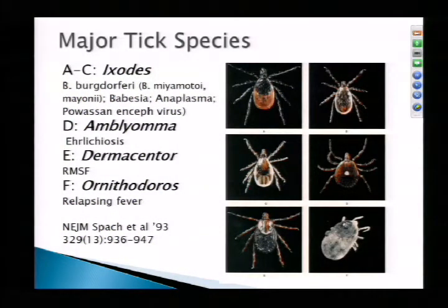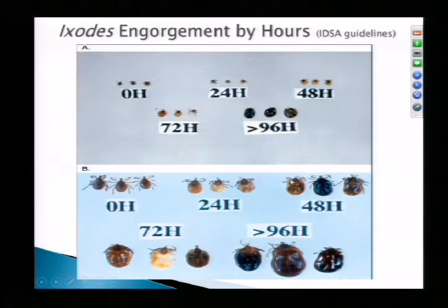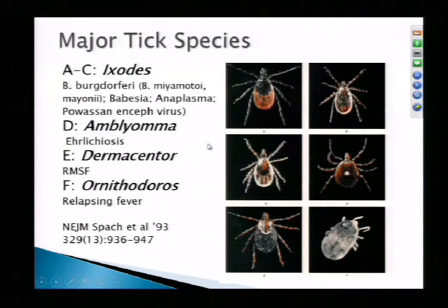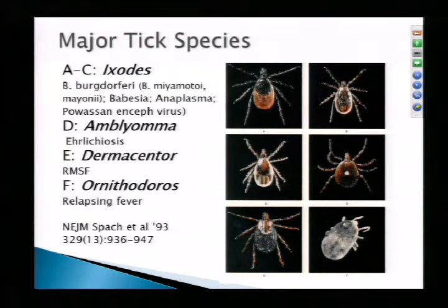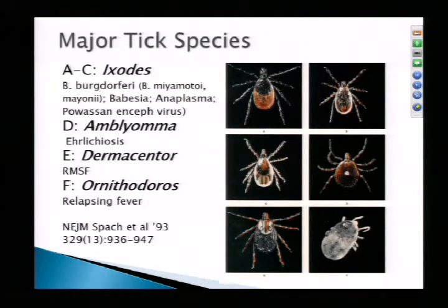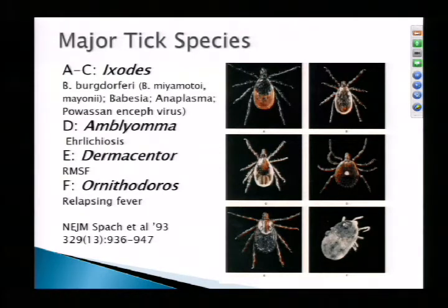You can't have a tick talk without having tick pictures. Shown here are examples of the most common ticks. A through C are all examples of the Ixodes tick, which is infamous for the multiple organisms it can transmit. It can be a vector for Borrelia burgdorferi — the agent of Lyme disease — as well as other Borrelia species such as Borrelia miyamatoi and Borrelia mayonii from the Mayo Clinic, plus Babesia organisms, Anaplasma organisms, and more recently an encephalitis virus.